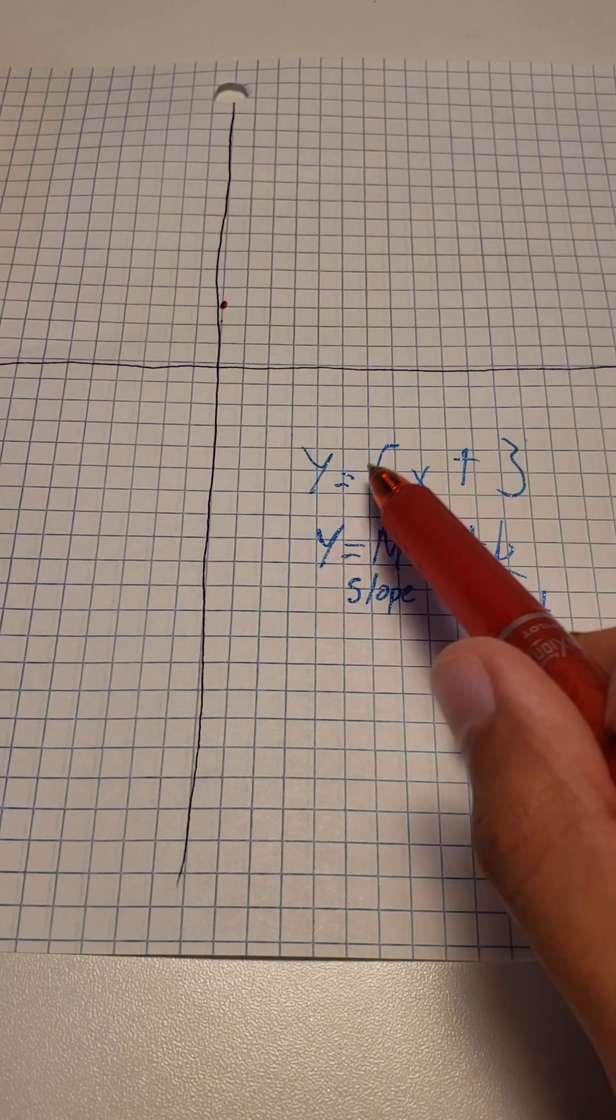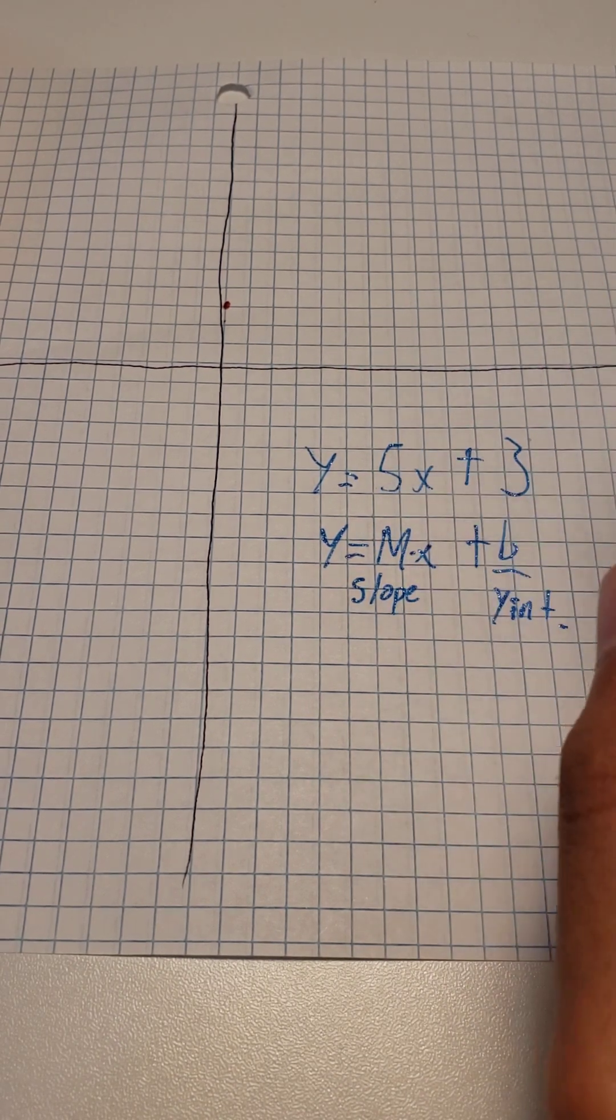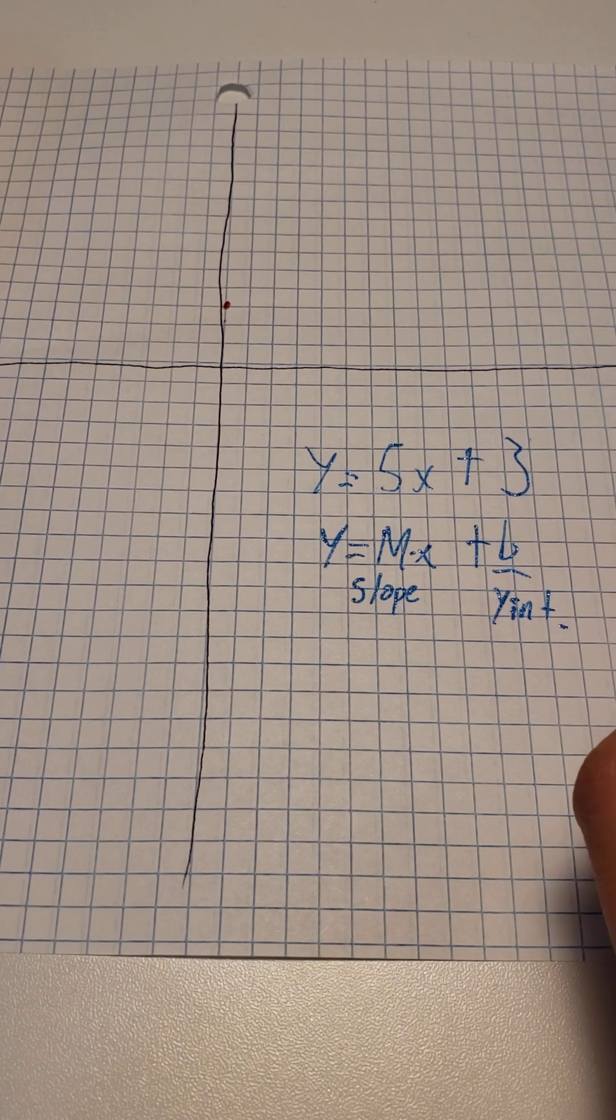And then you may be confused. How do we graph the slope? Because we need to know how high or low this line will go.